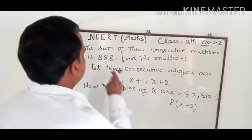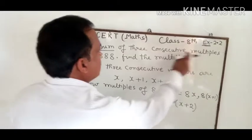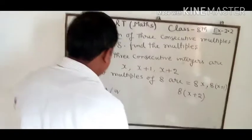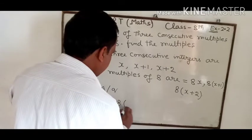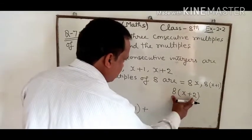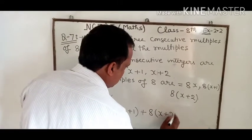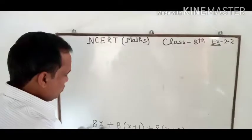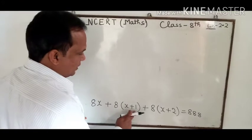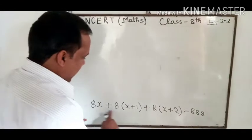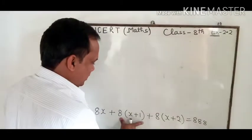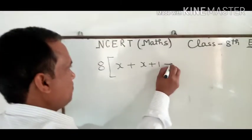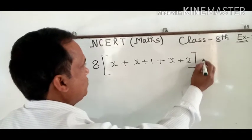Now the sum of multiples of 8 is 888. According to the question, 8x plus 8 times x plus 1 plus 8 times x plus 2 is equal to 888. Here we take 8 common from this term, this term, and this term. So we can write 8 times x plus x plus 1 plus x plus 2 equals 888.